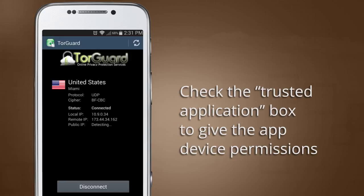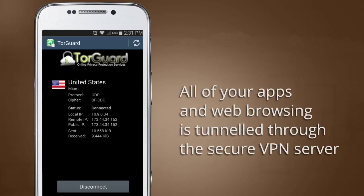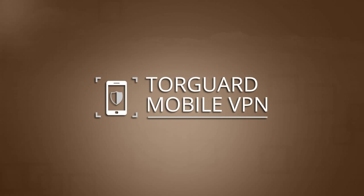You should now see a connected status showing that the secure VPN tunnel is now active. All of your apps, as well as your web browsing, will now run through the private TorGuard VPN server. So don't just sit there — get out into the world and enjoy the protection of your TorGuard mobile VPN.